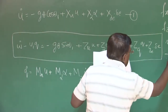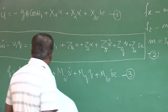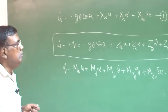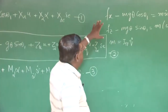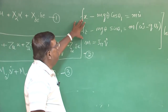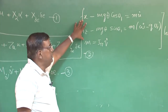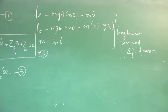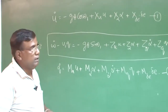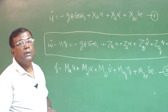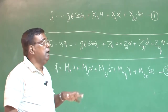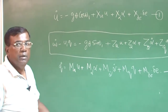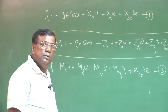Let us recall why we are doing all this. We realize that these are the longitudinal perturbed equations of motion. And if I want to comment on the dynamic stability of the plane, I need to track the values of u, w, q — all these perturbed quantities. Depending upon how they are changing, we will comment whether the plane is dynamically stable or not. For example, if I give a small disturbance and u goes on increasing, I know that it is not dynamically stable as far as u is concerned. The same logic applies to w and q.